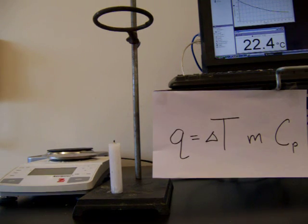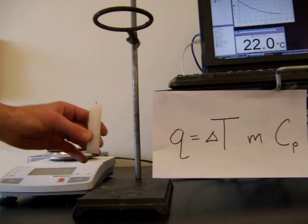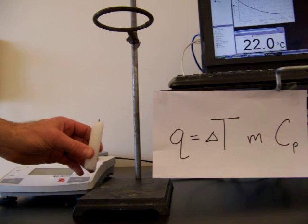This is the heat of combustion of paraffin, where we're going to find out how much heat is released when paraffin burns. Paraffin is just another name for wax, so we're going to be burning a candle here. We're going to be seeing how much heat is released as the wax burns.